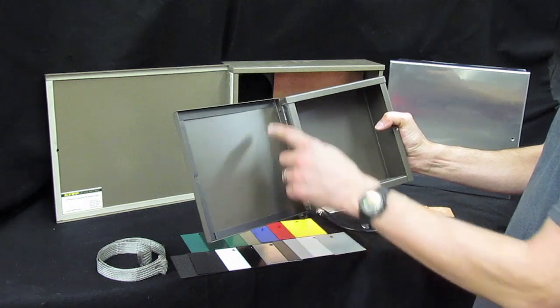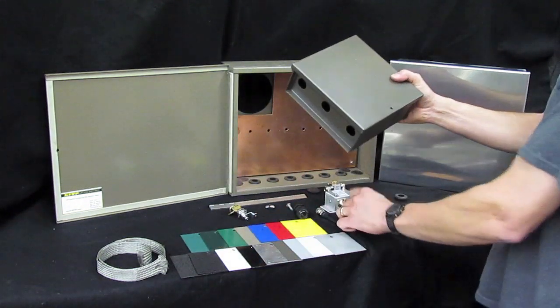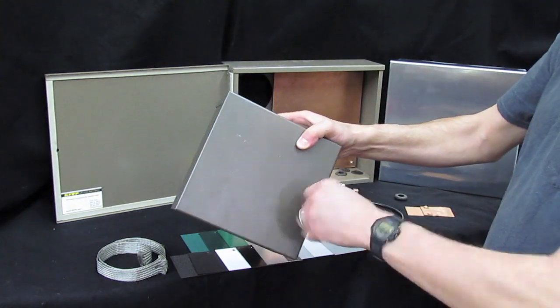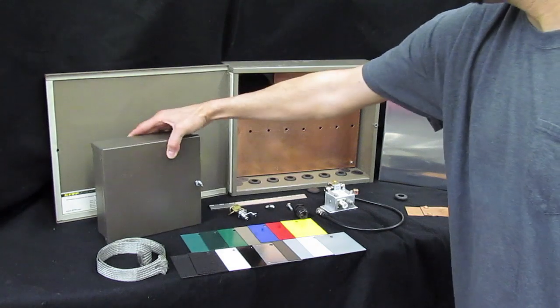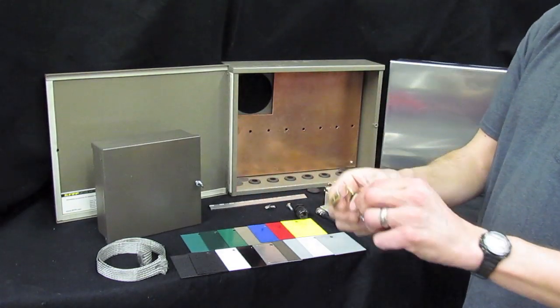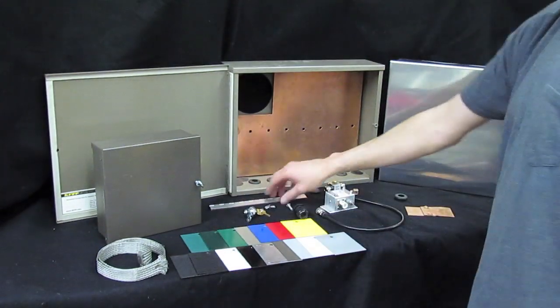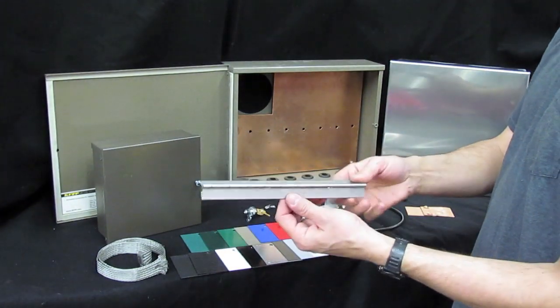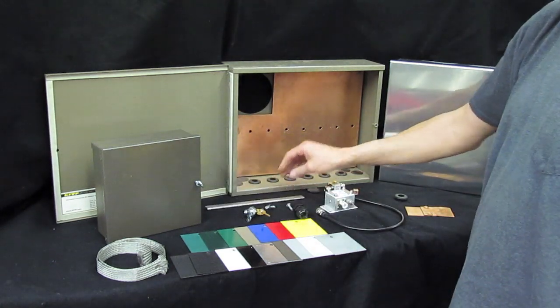The lid does have a gasket on it to keep it dry and they come standard with a simple thumbscrew hold down to keep the lid closed. If more security is needed we can also do a regular keyed lock on that. The hinges that I use are a stainless steel hinge so they shouldn't rust, last forever, of course they're powder coated along with the box as well.